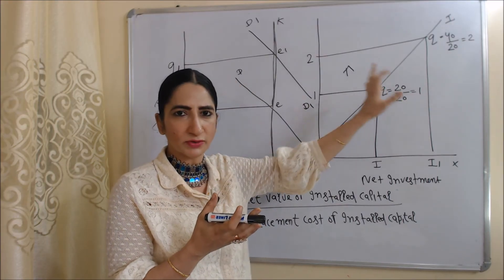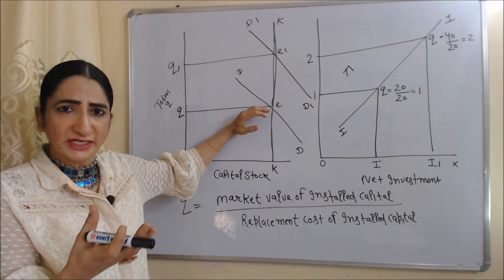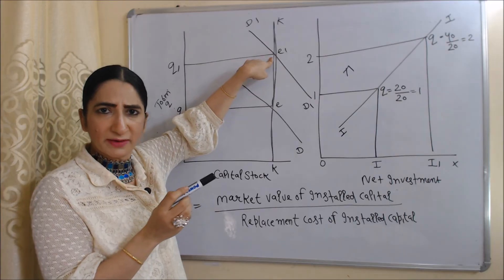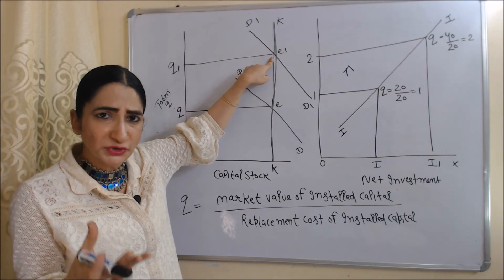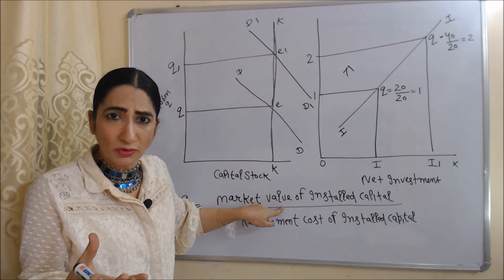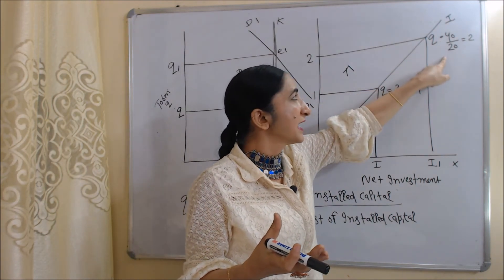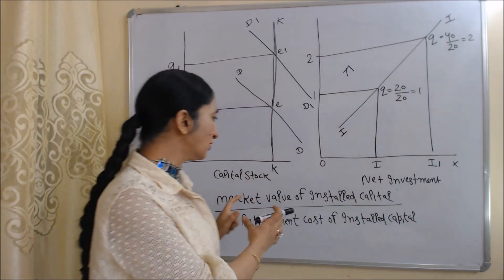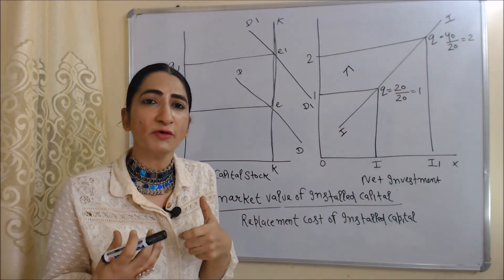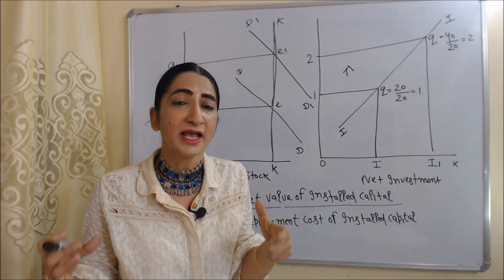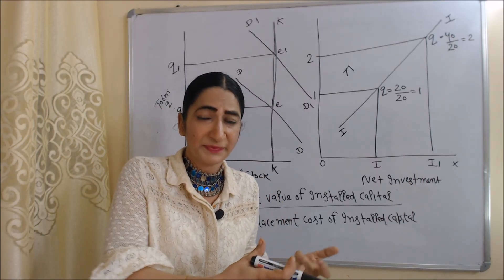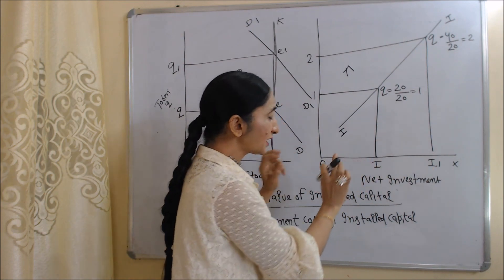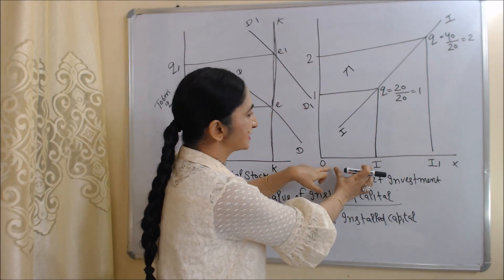Now suppose demand for the company's shares increases. As demand increases, the demand curve shifts forward from DD to DD1, and the new equilibrium point is E1. If demand for firm shares increases, prices of shares increase, and therefore market value of installed capital also increases. Now market value is 40 and replacement cost is 20, so 40 divided by 20 equals 2 — Q is more than 1. If prices of shares are very high, that motivates the firm to invest more in new assets. As a result, investment increases from OT to OT1.